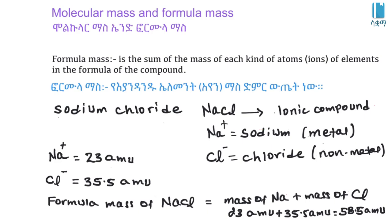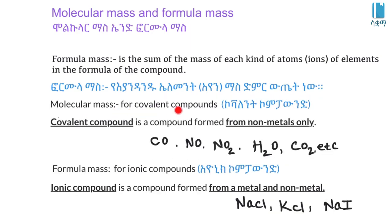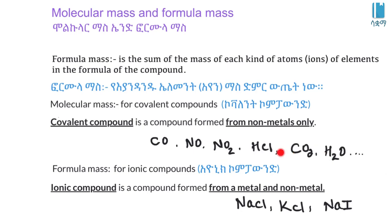The formula mass is calculated when the compound is given. For covalent compounds, molecular mass is used. Covalent compounds are formed from nonmetals only, for example carbon dioxide and water. Carbon dioxide contains carbon and oxygen, and water contains hydrogen and oxygen.